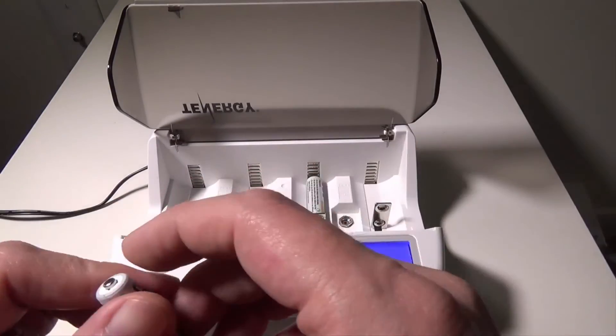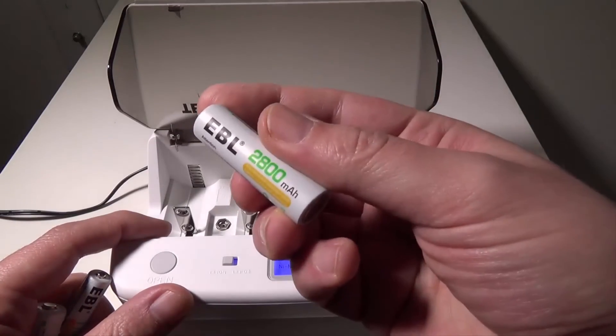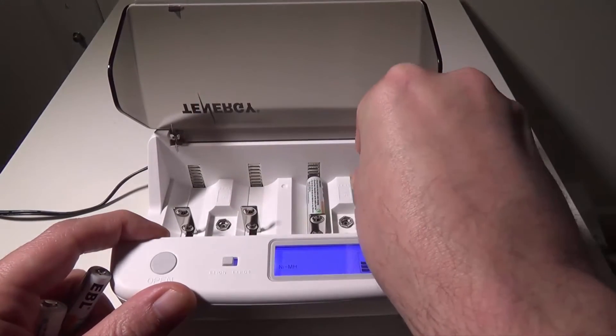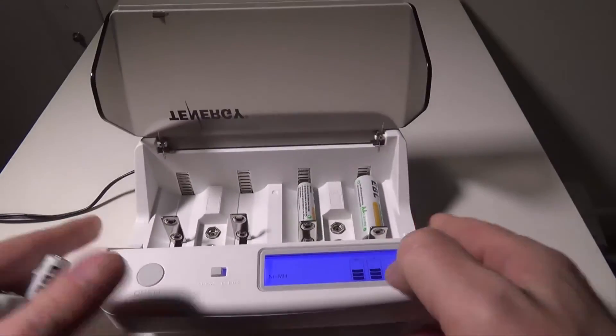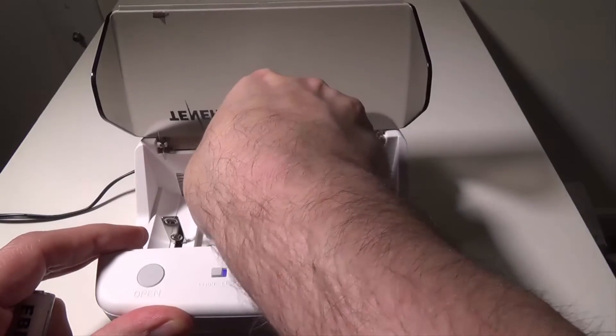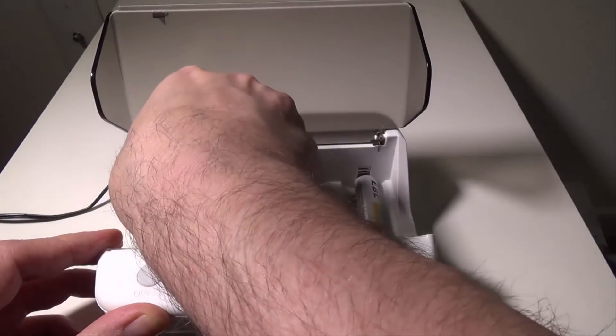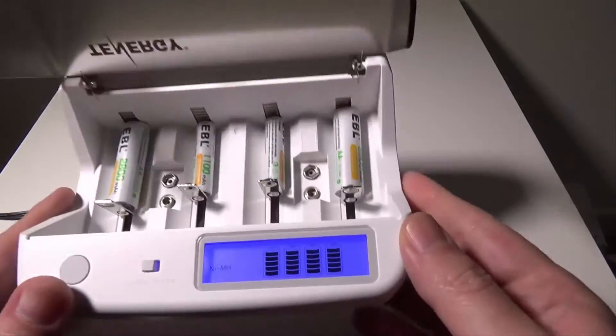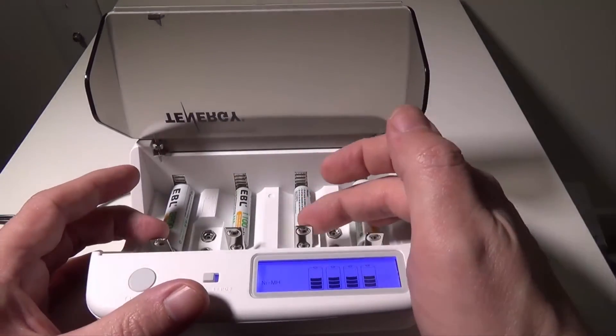When it gets full, this will automatically shut off, so you just pretty much set it and forget it type deal. I've got a double-A here, this is a 2800 milliamp battery. We'll stick that in there as well, and then you've got your third and fourth bays going. And we can just continue to stack batteries in, and it doesn't really matter which slots we stack them in.